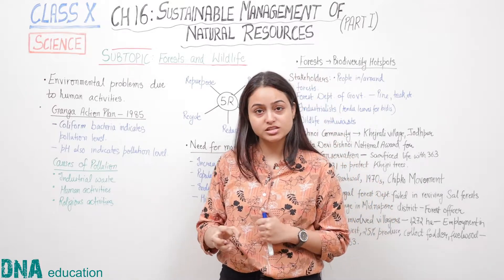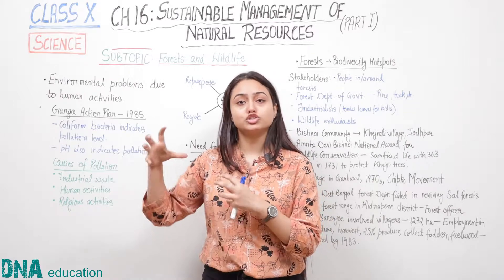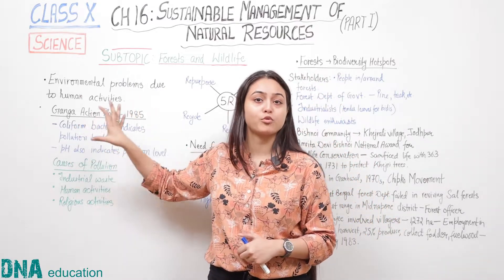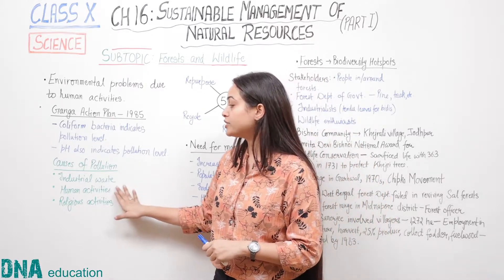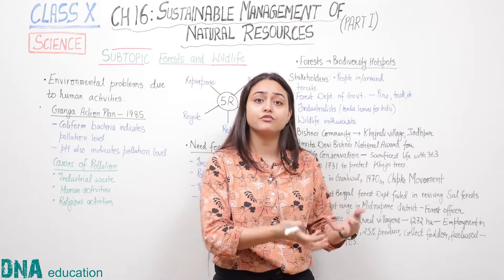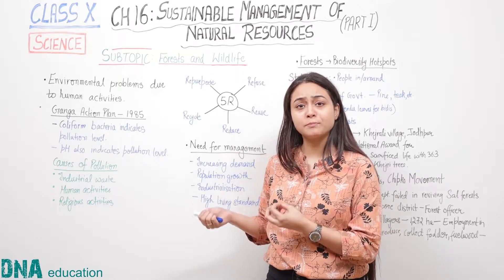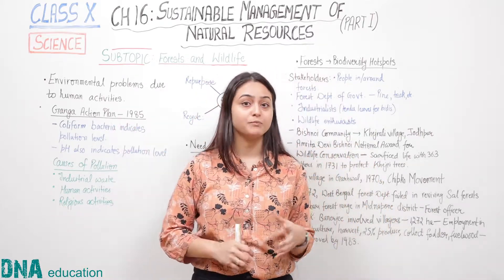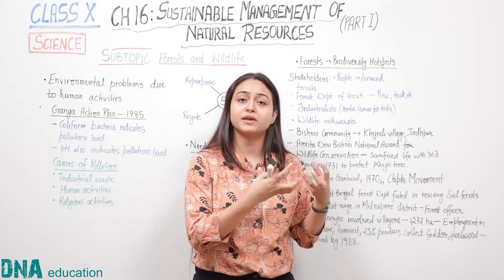The causes of such high pollution in river Ganga include industrial wastes — with increasing industrialization, untreated industrial effluents flow into river waters, polluting the water body and destroying aquatic organisms and plants. Human activities are another major cause: in rural and urban areas, people wash clothes, bathe animals, and dump garbage directly into river waters. Religious activities are also a significant cause — dead bodies, ashes, flowers, worship idols, and offerings are all immersed into the river.